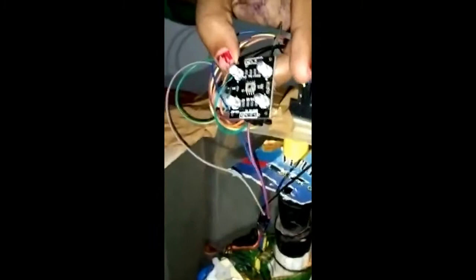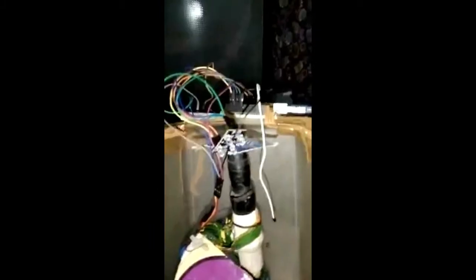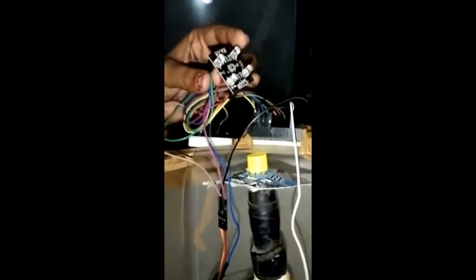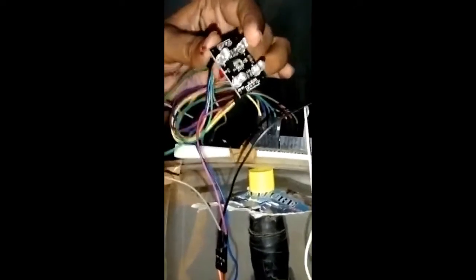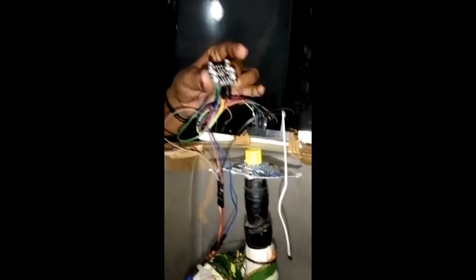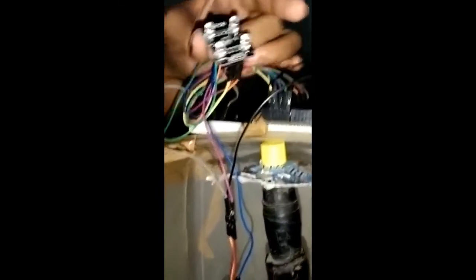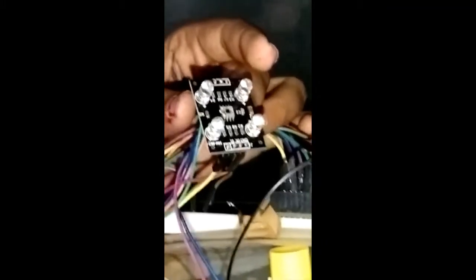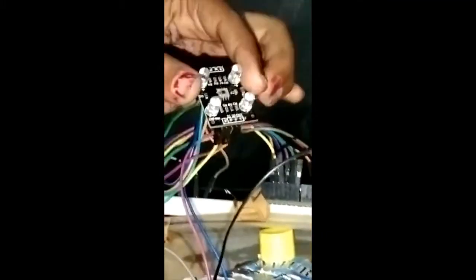So, this first one is the color sensor, the TCS3200 color sensor. This is the programmable color light to frequency converter and it can detect a wide variety of color. And this model has these four white LEDs. And this model is designed in such a way that these white LEDs will light the object and reflections from that object to the sensor.